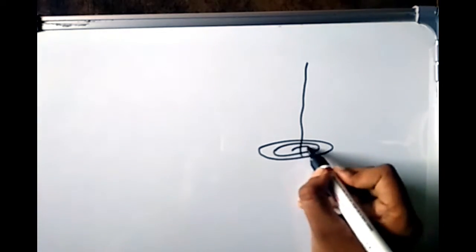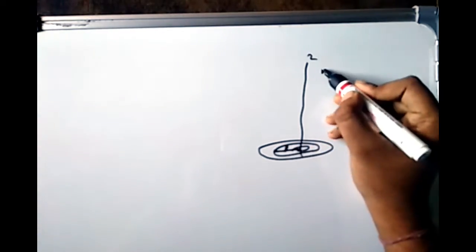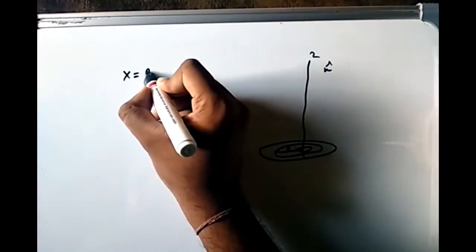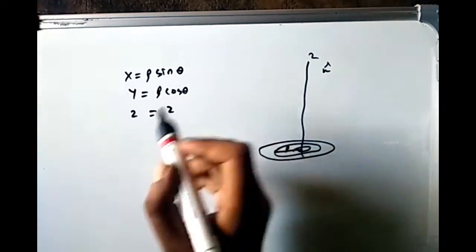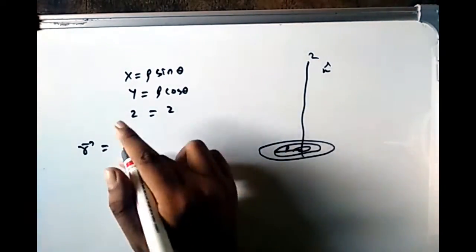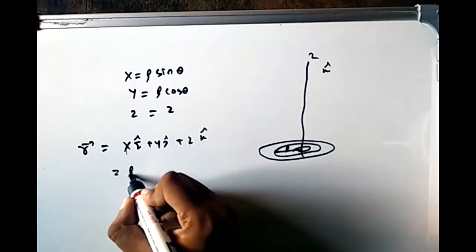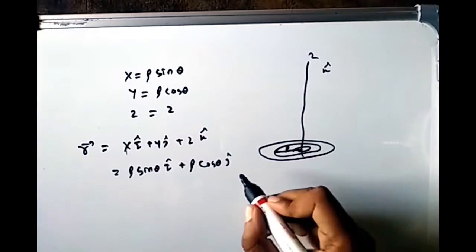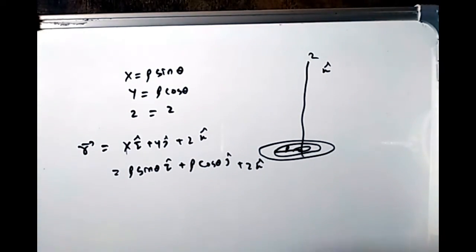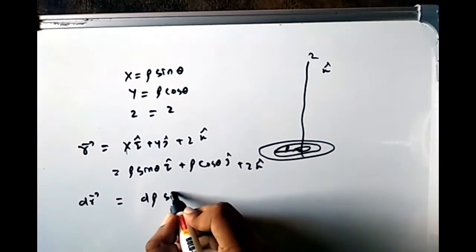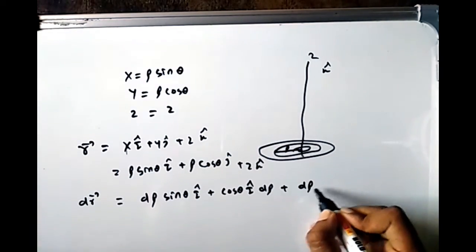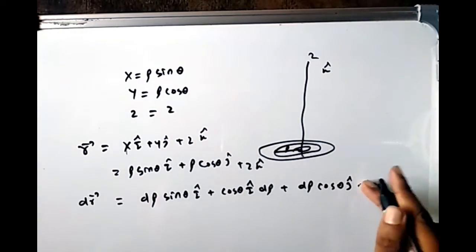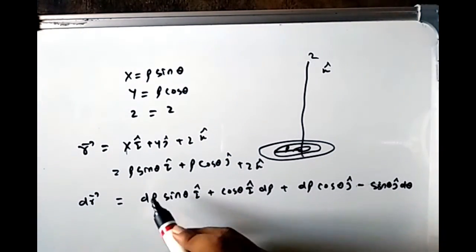Now let us apply this to cylindrical polar coordinates as an example. The transformation is x = ρ sin θ, y = ρ cos θ, z = z, and r = x î + y ĵ + z k̂. Substituting, r = ρ sin θ î + ρ cos θ ĵ + z k̂. Then dr = (sin θ dρ + ρ cos θ dθ) î + (cos θ dρ − ρ sin θ dθ) ĵ + dz k̂.